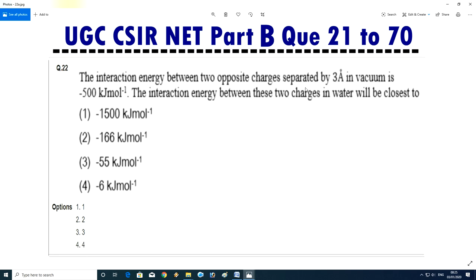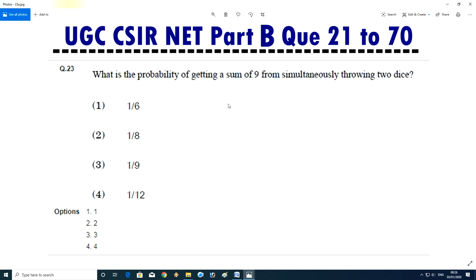Question No.23/24 - Interaction energy between two opposite charges separated by 3 angstrom in vacuum is 500 kilojoule per mole. The interaction energy between these two charges in water will be closest to? Answer will be D. Question 24/25 - What is the probability of getting a sum of 9 from the simultaneous throwing of 2 dice? The answer is 3, 1 by 9.